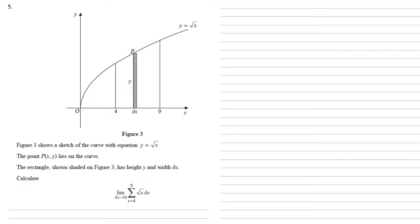We're being asked for the sum of all those rectangles of delta x by y between 4 and 9, and we're making delta x smaller and smaller so it's tending towards 0.